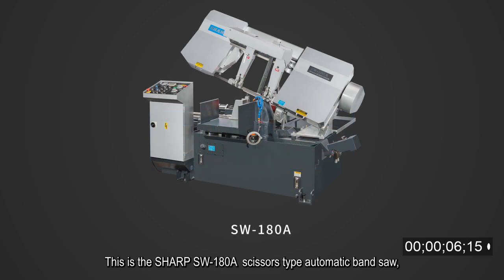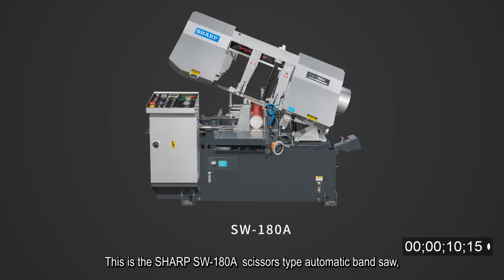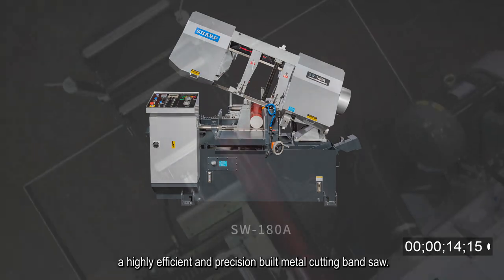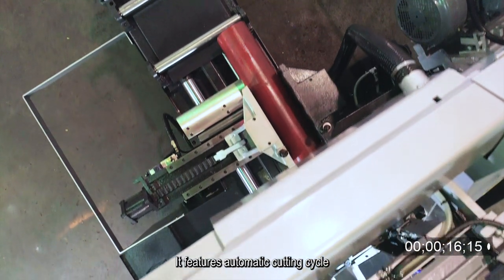This is the Sharp SW-180A scissors type automatic bandsaw. A highly efficient and precision built metal cutting bandsaw. It features automatic cutting cycle.